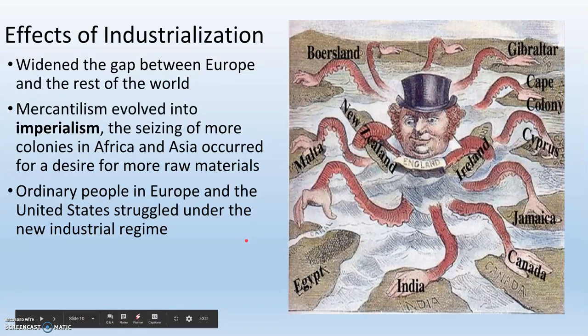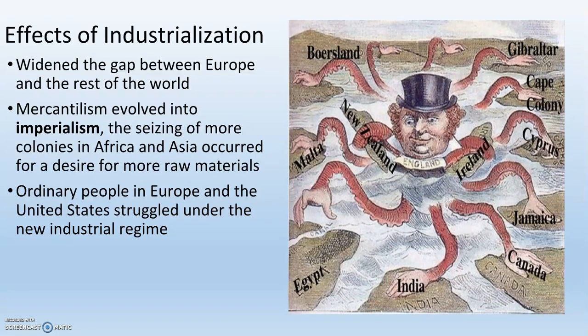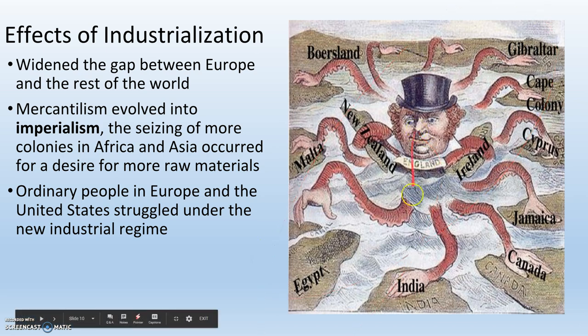Some major effects of industrialization: first, it widens the gap between Europe and the rest of the world — this is really the point where Europe is more technologically advanced in nearly all areas than the rest of the world. Mercantilism evolves into imperialism; they seize more and more land in Africa and Asia for raw materials. And ordinary people in Europe and the United States struggle under this new industrial regime — the rich have really gotten richer while the poor have gotten poorer.